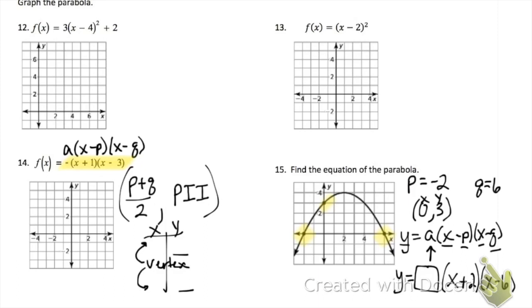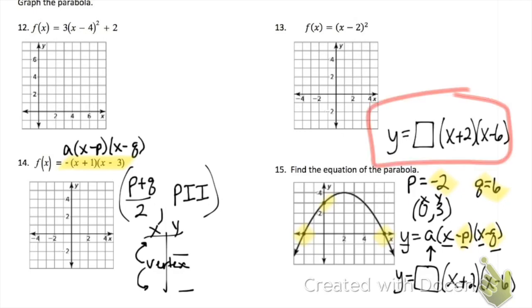Don't forget — we always change the signs of P and Q whenever we plug them into the equation. I just realized that last equation got cut off, so I wrote it up above and circled it in red.